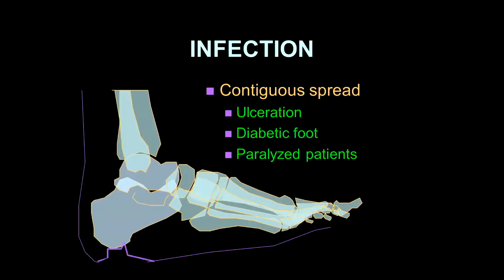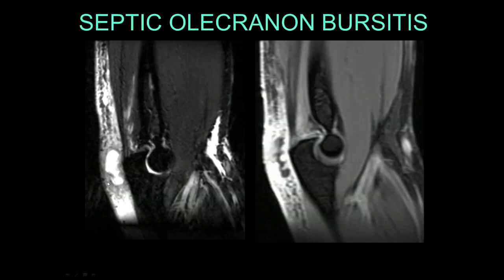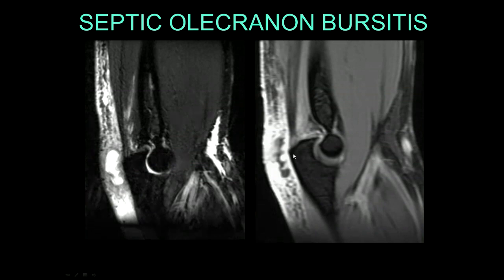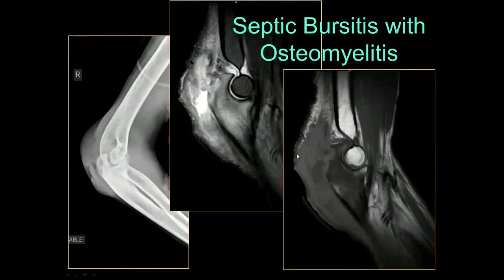Contiguous spread can also occur. We see this through ulcerations of various sorts, especially in diabetic patients and in paralyzed patients. Here's a patient with septic olecranon bursitis with fluid in the olecranon bursa at the elbow and surrounding inflammation. Notice there's no involvement of the olecranon. However, this can become more indolent, ulcerate, and involve the olecranon itself. In this case: septic olecranon bursitis, ulceration, and involvement of the olecranon.